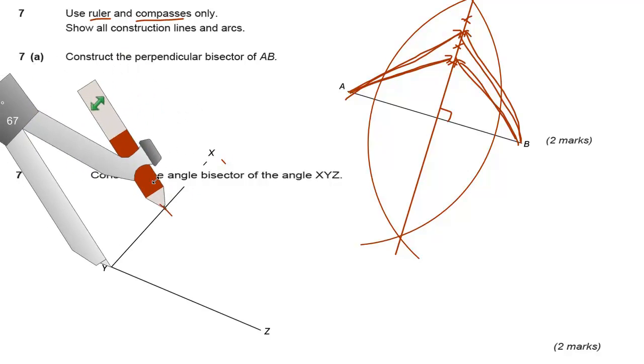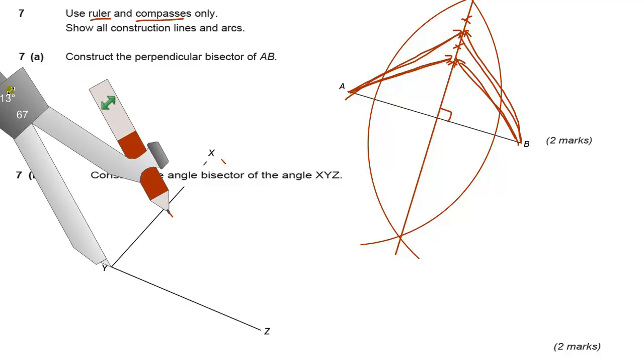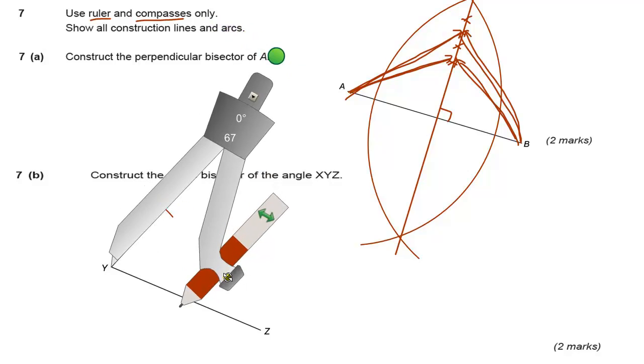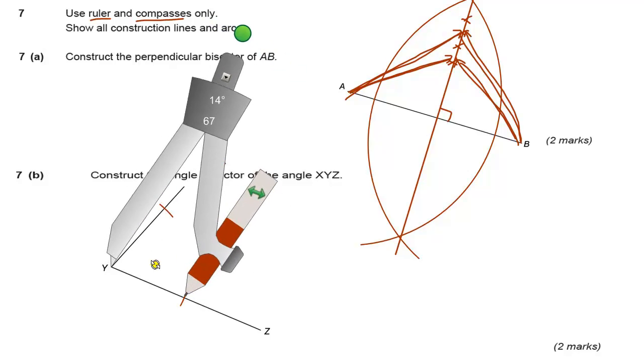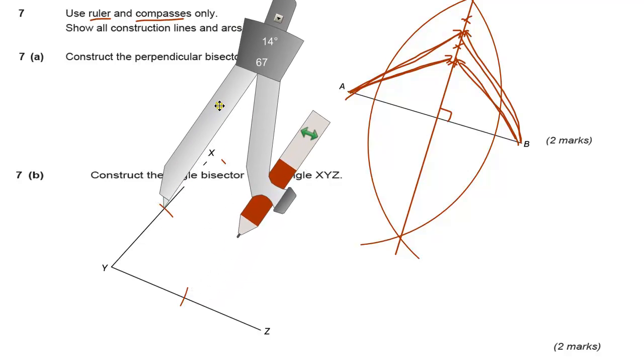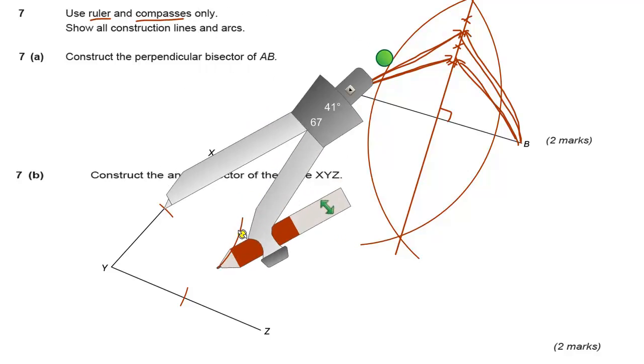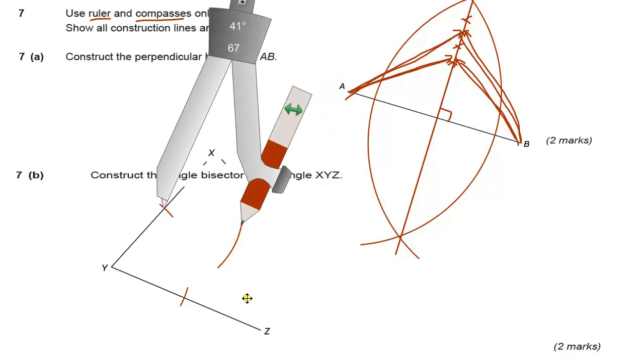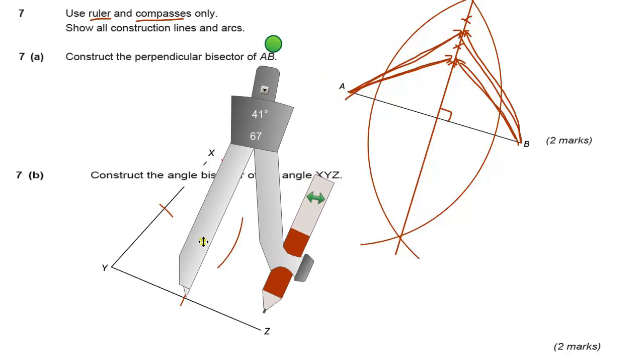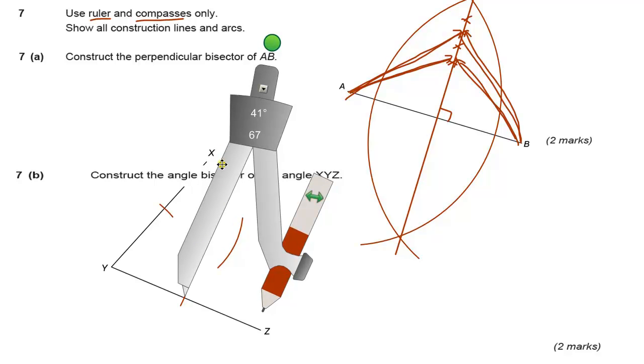So if we have a compass, to do this we mark on a point on that line and this line that are the same distance away from our center angle. We move our compass to those points, and we're looking for a point halfway between X and Z, where these two arcs will cross.